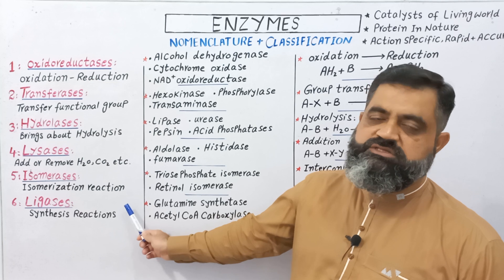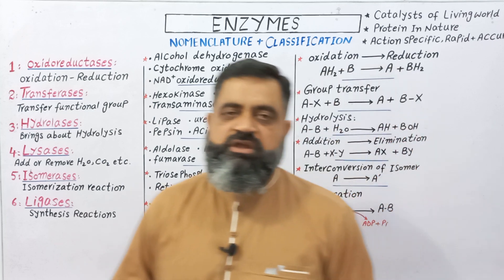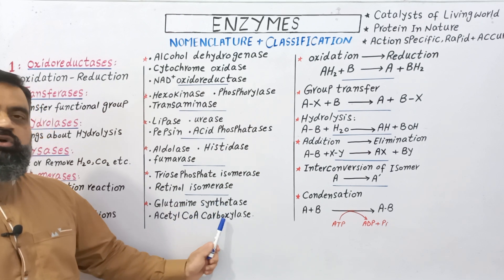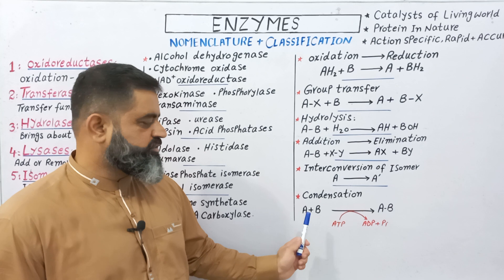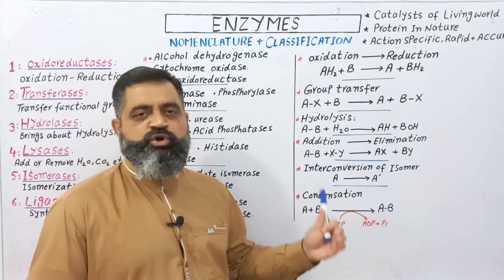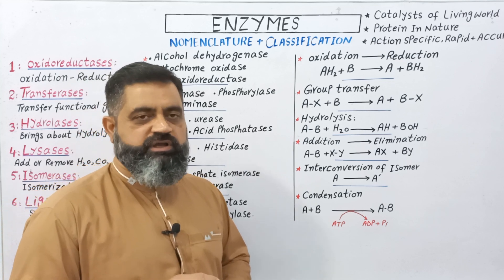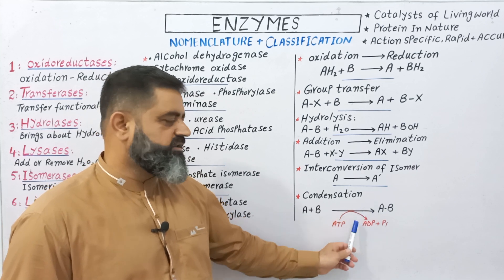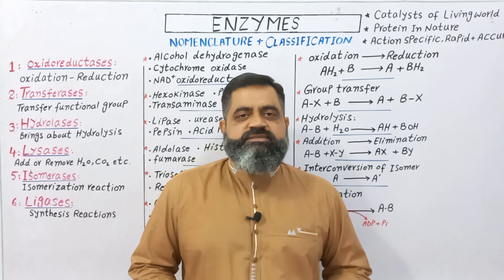The final category is ligases. These enzymes catalyze synthesis reactions. Examples include glutamine synthetase and acetyl coenzyme A carboxylase. They perform condensation, which is a synthetic process — two molecules A and B combine to become A–B. Importantly, during this type of enzyme activity, ATP is utilized. The energy stored in ATP is released as ATP is converted into ADP and inorganic phosphate.